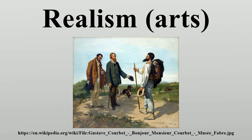Realism in the arts is the attempt to represent subject matter truthfully, without artificiality and avoiding artistic conventions, implausible, exotic and supernatural elements. Realism has been prevalent in the arts at many periods and is in large part a matter of technique and training.